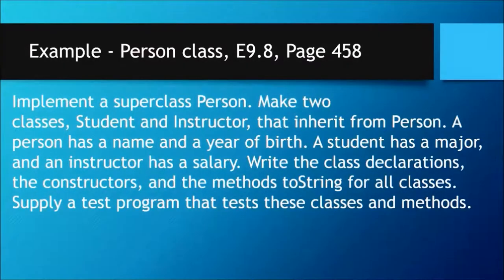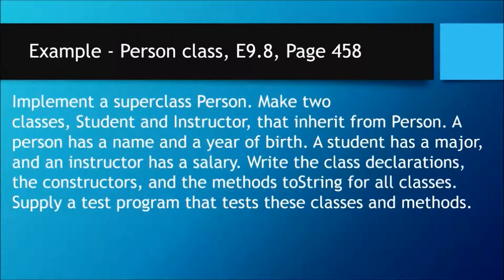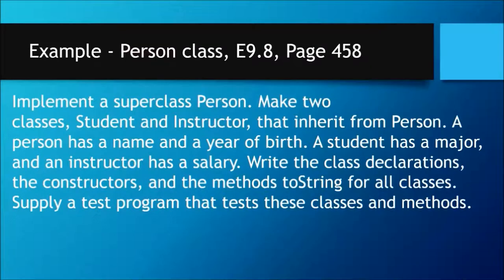Now let's take a look at the Person class — exercise number 9.8 on page 458 from your chapter book. Implement a super class Person, make two classes Student and Instructor that inherit from Person. A Person has a name and a year of birth. A Student has a major and an Instructor has a salary. Write the class declarations, the constructors and the toString methods for all classes. Supply a test program that tests these classes and methods.